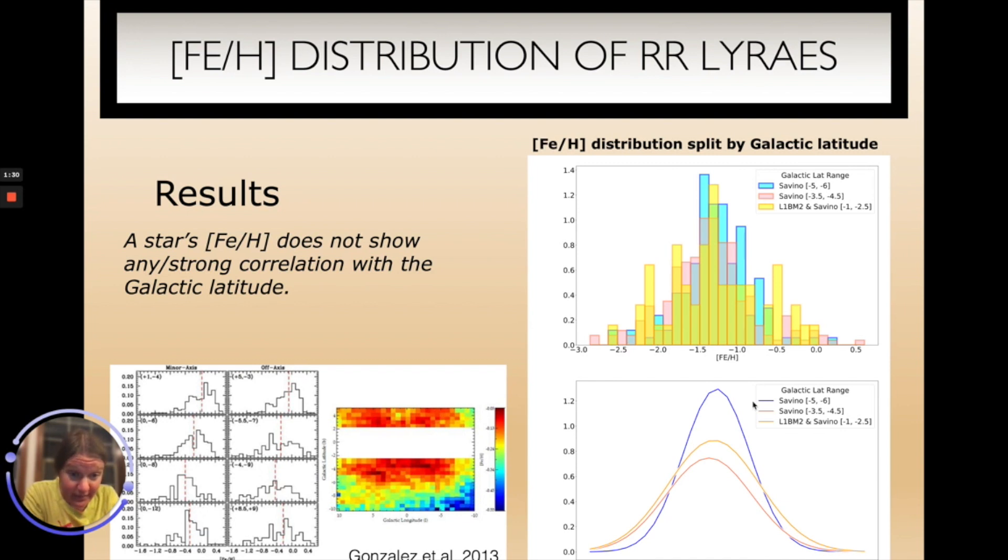This blue plot, this blue histogram, shows the metallicities of the RR Lyrae stars between a galactic latitude of -5 and -6. This pink plot shows RR Lyrae stars between 3.5 and 4.5 degrees in galactic latitude and this red histogram shows the metallicity distribution of the RR Lyrae stars closest to the plane of the galaxy at -1 to -2.5 galactic latitudes. All of these RR Lyrae star populations have a mean metallicity of about -1.2 consistent with what was found by Savino et al. in 2020.